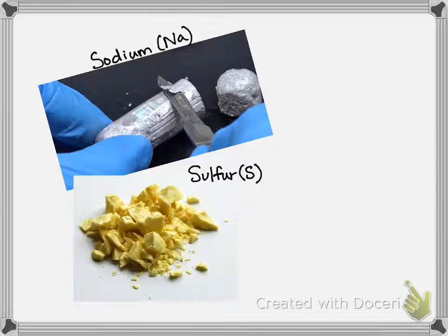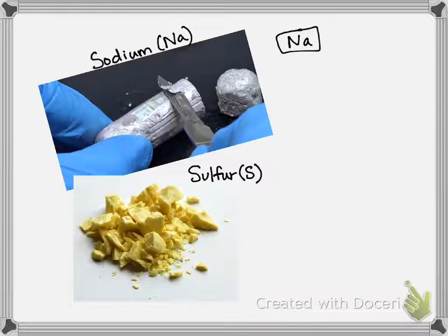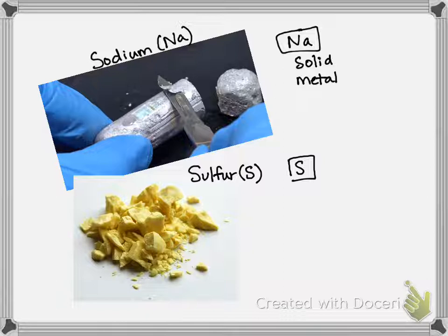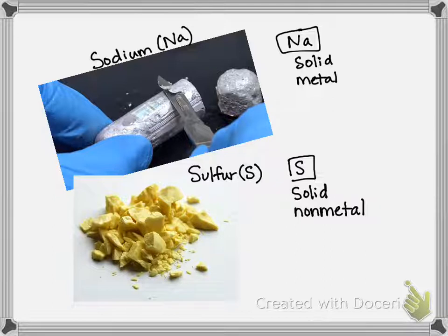These two substances look very different and they are very different. Just based on sodium being number 11 and its location on the table, we can say it is a solid at room temperature and it is a metal. For sulfur, based on its location on the table, it is a non-metal, and it is also a solid at room temperature — we can see both of these in the image.